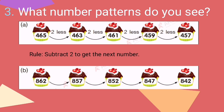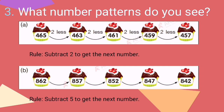For letter B, the rule is subtract 5 to get the next number. So we have 862 minus 5, it will be 857, then 852, then 847, and the last number is 842.